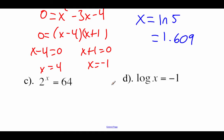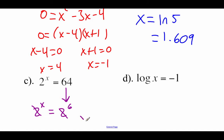Taking a look at our next example: we've got 2 to the power of x equals 64. This actually is a one-to-one property equation because I can rewrite 64 as 2 to the 6th power. So then our equation says 2 to the x equals 2 to the 6th. Cross off those bases of 2 and our equation says x equals 6.